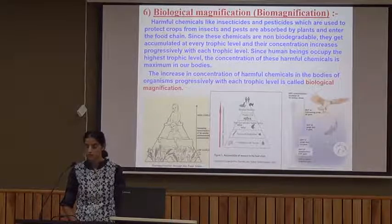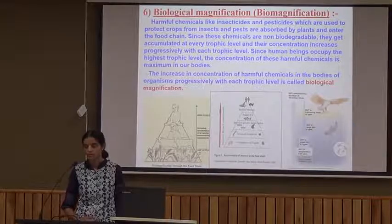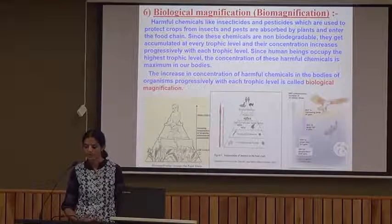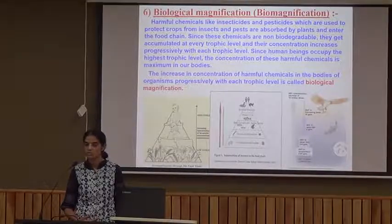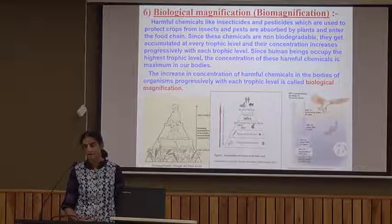Human beings, who are at the top of each food chain, are the ones who receive the maximum concentration of these chemicals in their bodies. This is called biomagnification.